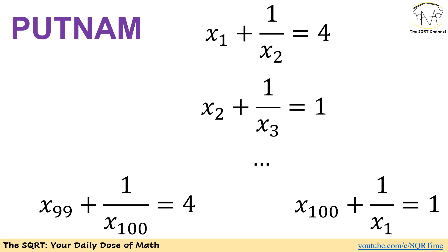Hello everyone, welcome to the SQRT channel. In this video we are going to talk about a platinum level problem. We have x1 plus 1 over x2 equals 4, x2 plus 1 over x3 equals 1, and we see the same pattern up to x99 plus 1 over x100 equals 4, and for the last equation x100 plus 1 over x1 equals 1. We are going to find values for x1 up to x100 that satisfy all these equations.